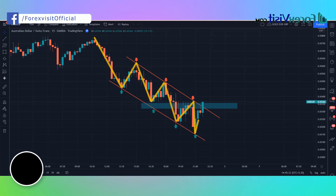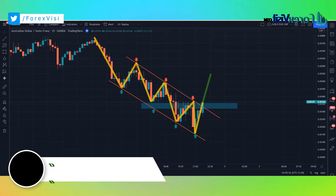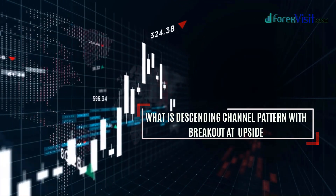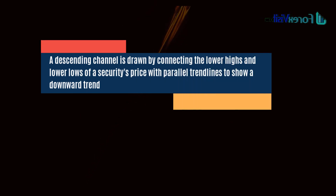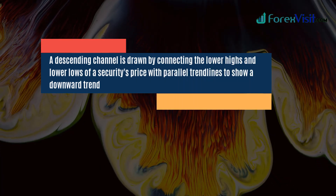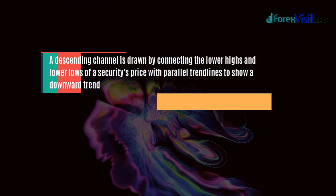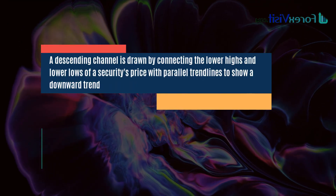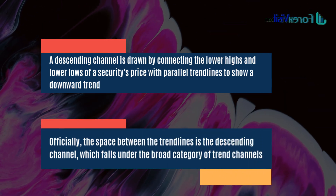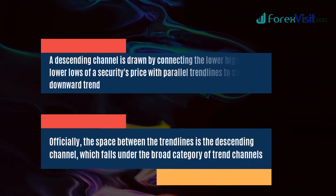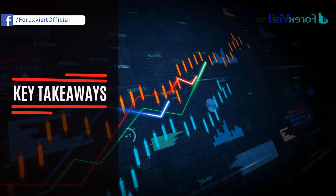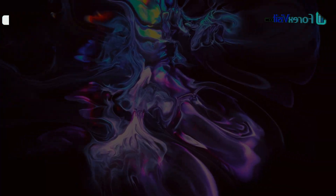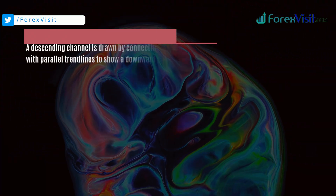We make a descending channel pattern with a breakout at the upside. A descending channel is drawn by connecting the lower highs and lower lows of a security's price with parallel trend lines to show a downward trend. The space between the trend lines is the descending channel, which falls under the broad category of trend channels.